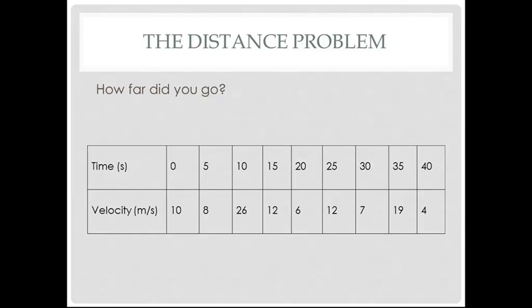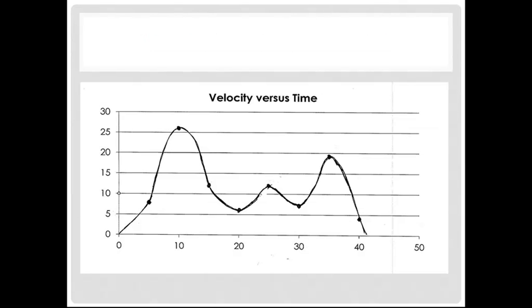You were going 26 meters per second 10 seconds later, and so forth. Well, the graph comes out something like this, and so the y axis here is velocity, and the x axis here is time.